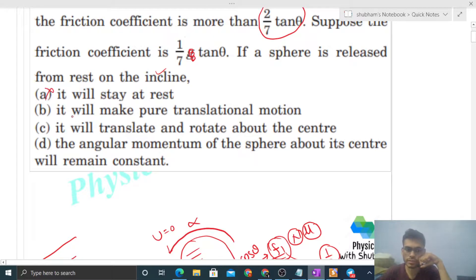It will stay at rest - no, it will not stay at rest. It will make pure translational motion - pure translational motion happens when mu equals zero, means if friction force becomes zero. In that case, there's no torque about center of mass, alpha becomes zero, it means the body does not rotate, only translates. So option B is also not correct.